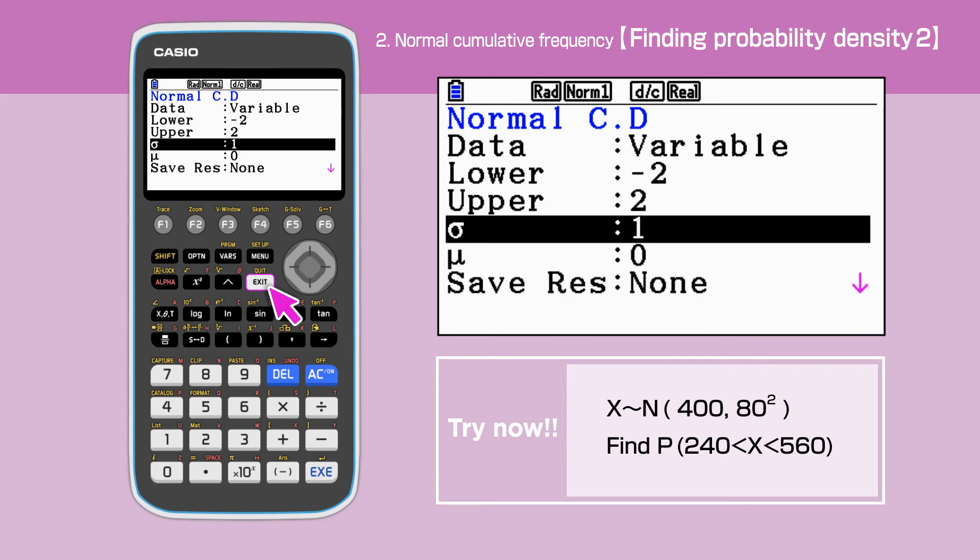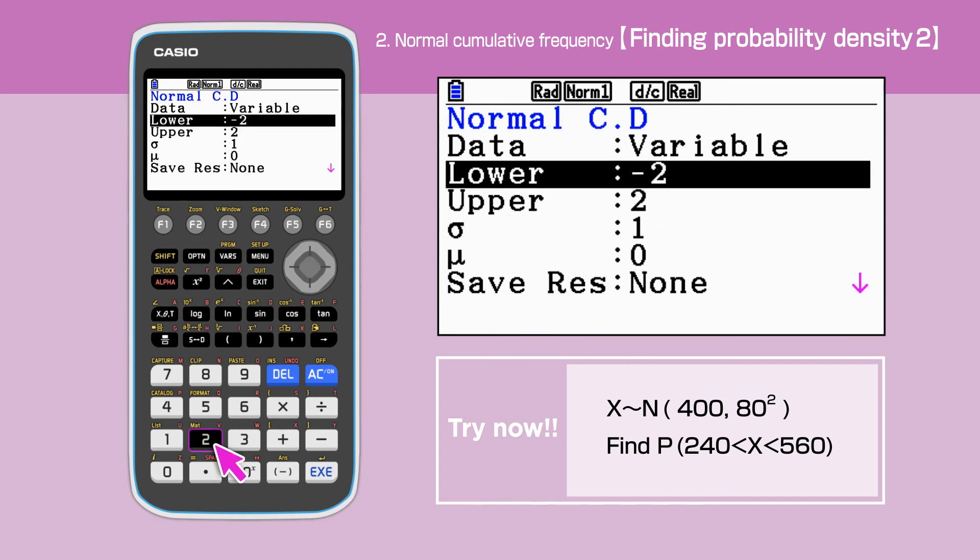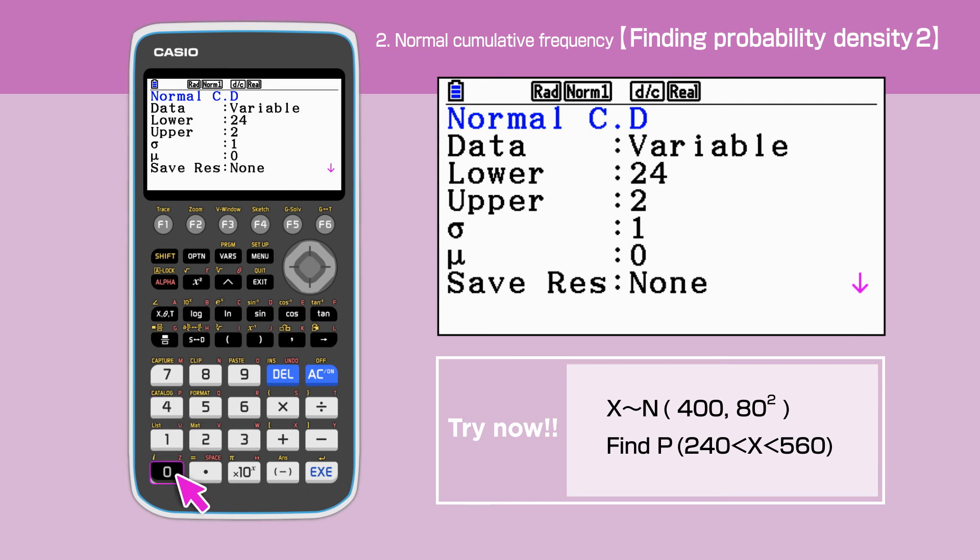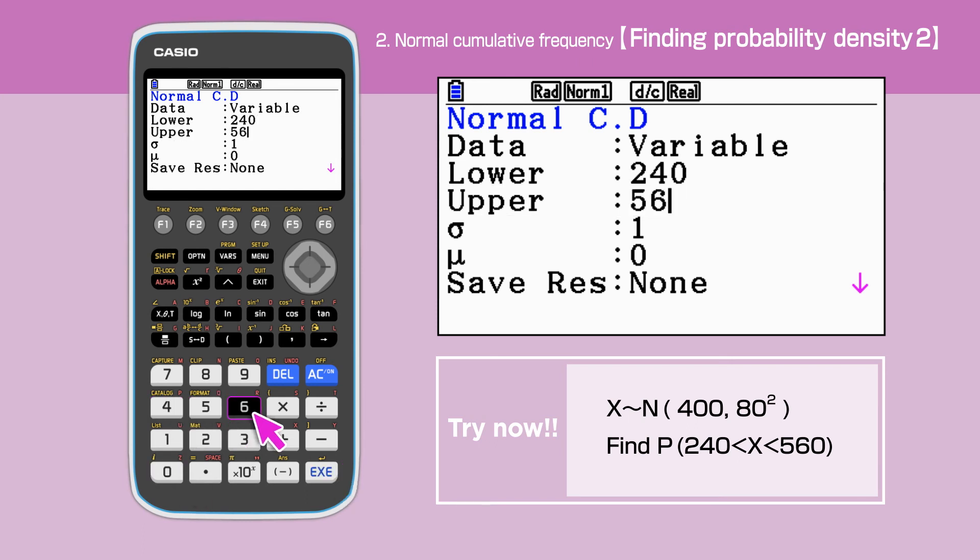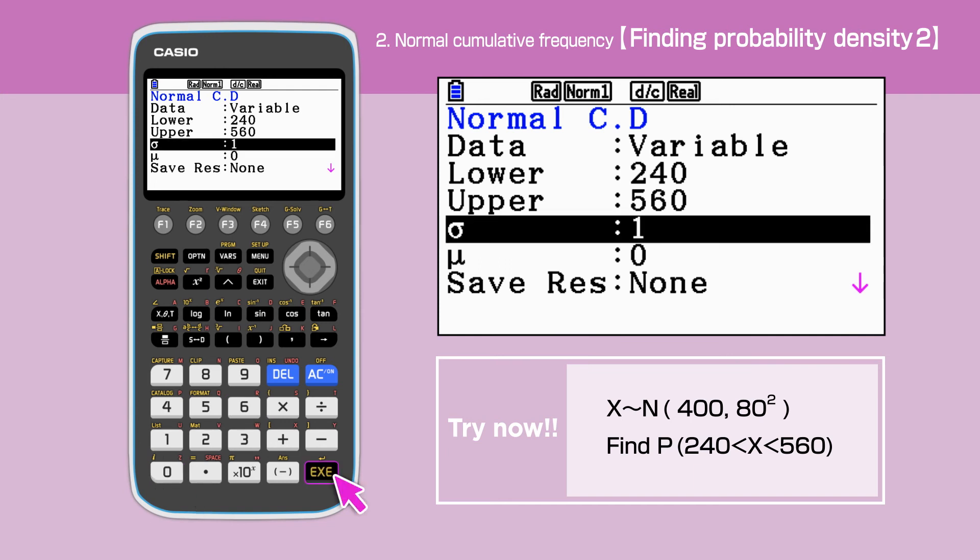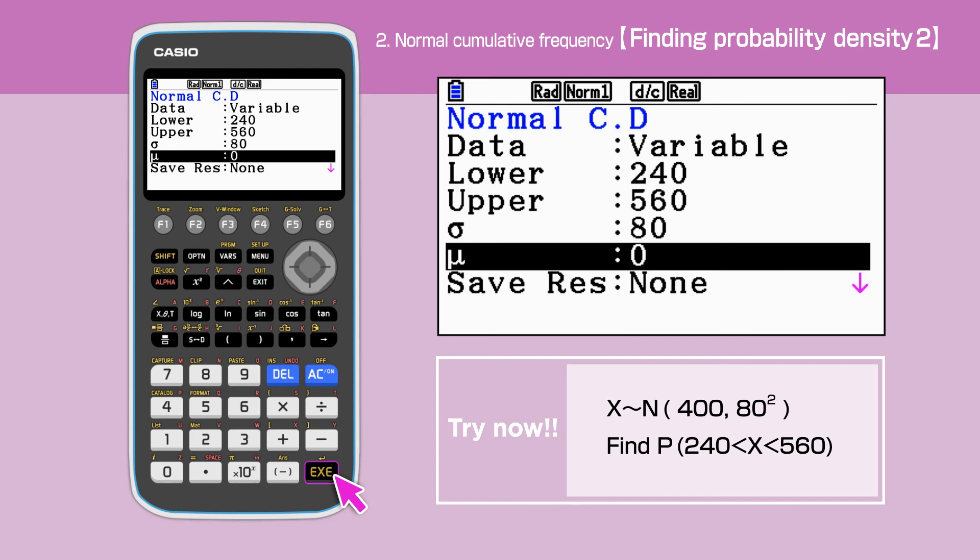Press Exit and go back to the screen and enter the following values. For this question, lower value for X is 240, upper 560, sigma 80, and mu 400.